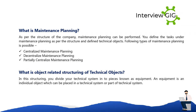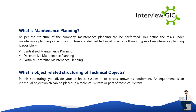In the object-based structure of technical objects, you divide your technical system into pieces known as equipment. Equipment is an individual object that can be placed in a technical system or be part of a technical system.